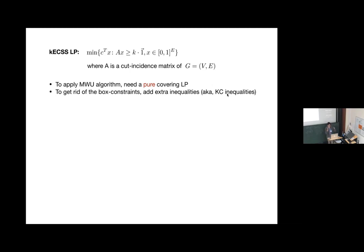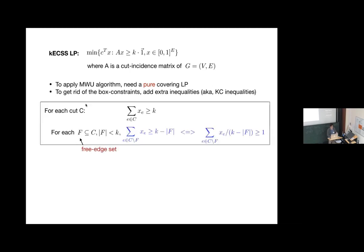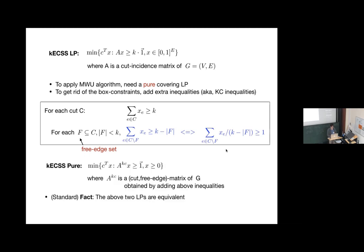The standard way to get rid of box constraints is to add knapsack cover inequalities. For each cut C, originally we want the cut to be covered at least K. When we add KC inequalities, for each subset F of edges inside the cut with |F| at most K, we add the constraint that the sum of X inside the cut excluding F is at least K minus |F|. Normalizing by 1 over K minus |F|, this gives a new type of constraint which we call the KC cut-free edge metric.